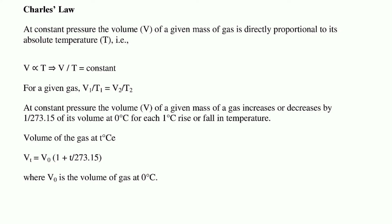Charles' law states that at constant pressure, the volume V of a given mass of gas is directly proportional to its absolute temperature. So V/T is a constant: V₁/T₁ = V₂/T₂ = Vₙ/Tₙ. At constant pressure, the volume of a given mass of gas increases or decreases by 1/273.15 of its volume at 0°C for each 1°C rise or fall in temperature. So the volume at T°C is Vt = V₀(1 + T/273.15), where V₀ is the volume at 0°C.